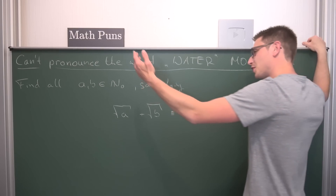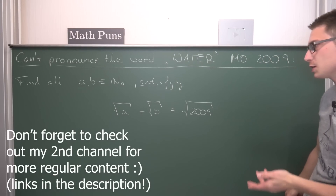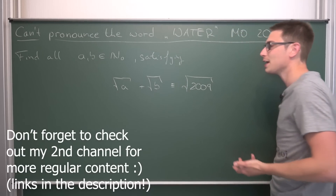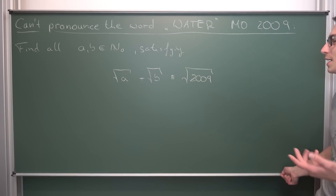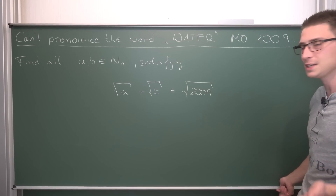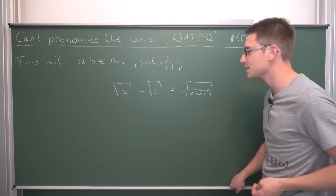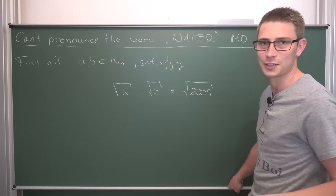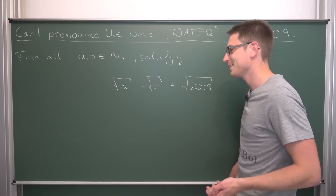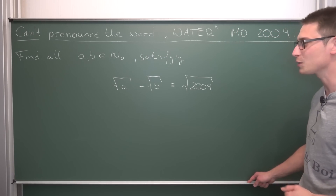We need to find all numbers a and b out of the positive integers including zero satisfying: the square root of a plus the square root of b is equal to the square root of 2009. It's a fun one, sent to me via email, and I really like this problem — it's just like other square root problems, they're just fun to work through. Try it out for yourself and once you're done keep watching the video for the solution.